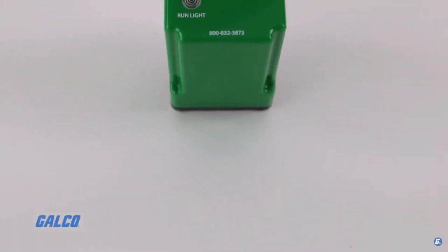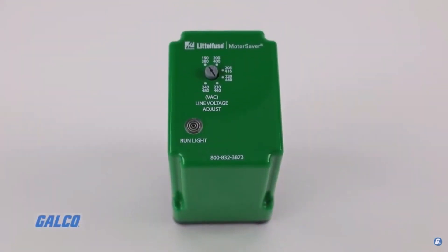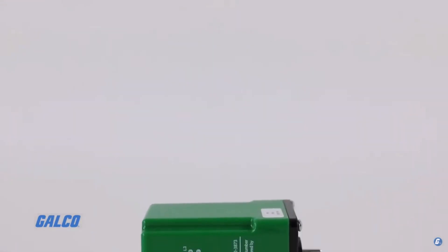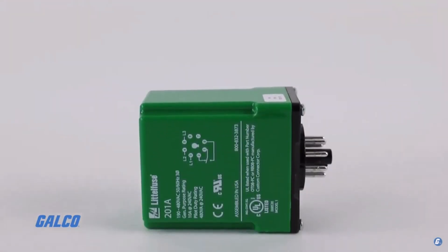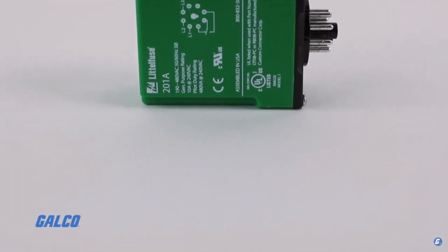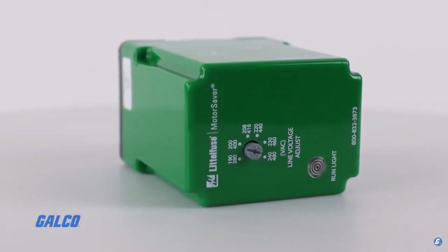The 201A Series Motor Saver by Littlefuse is an auto-ranging voltage monitor designed to protect three-phase motors from damage caused by incoming power problems.